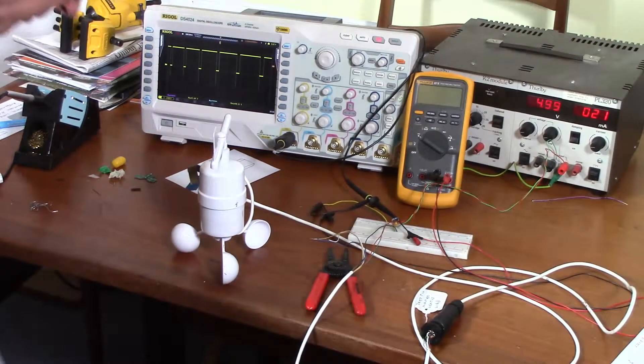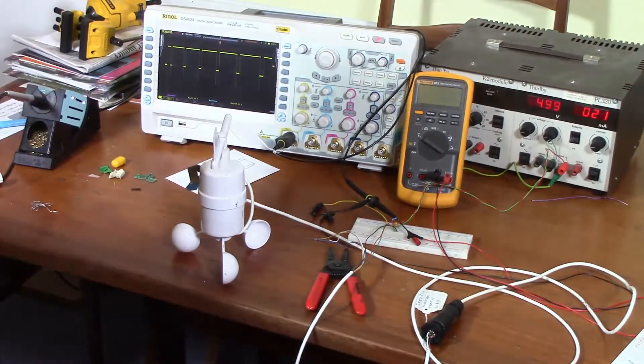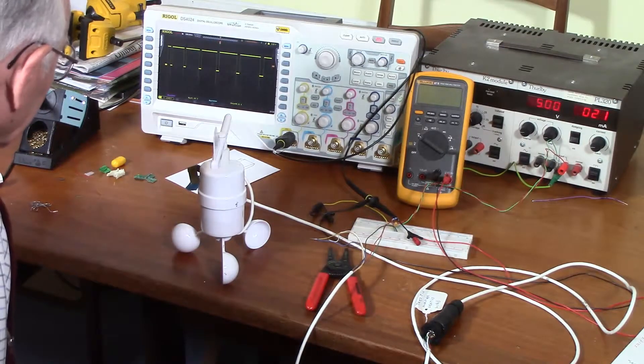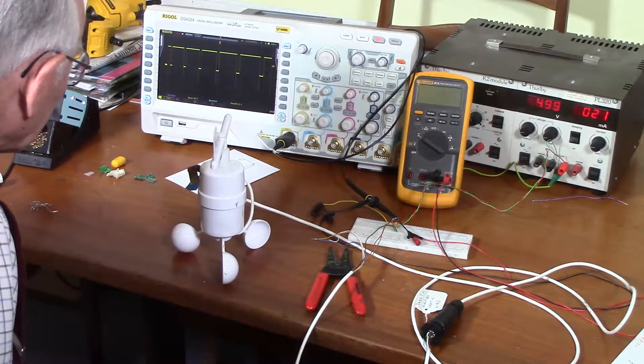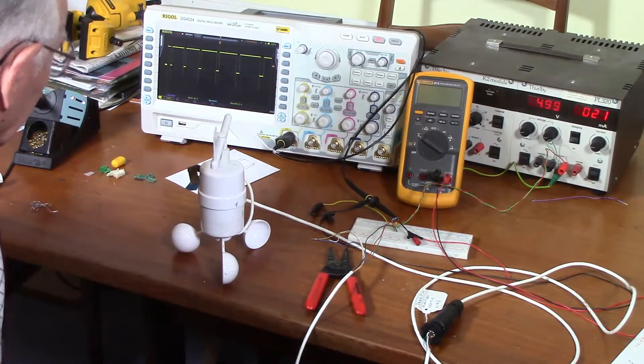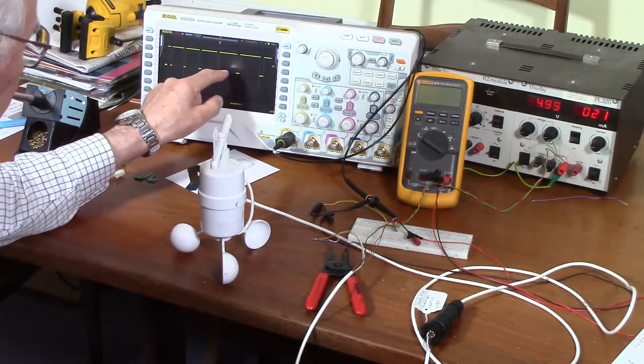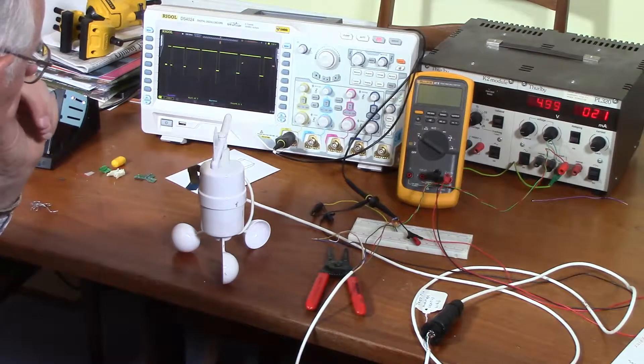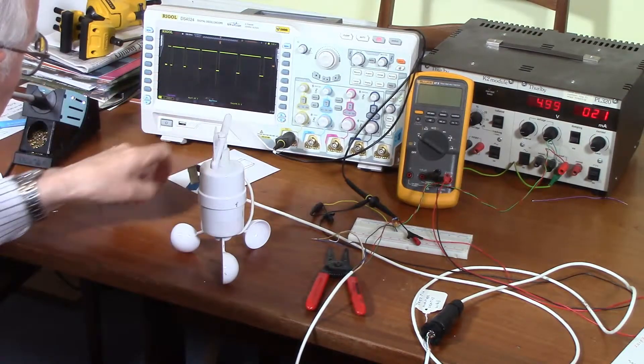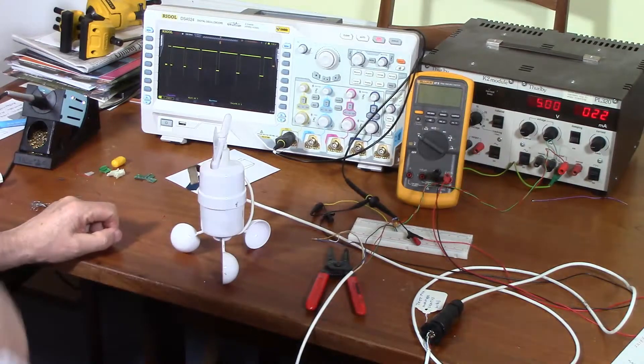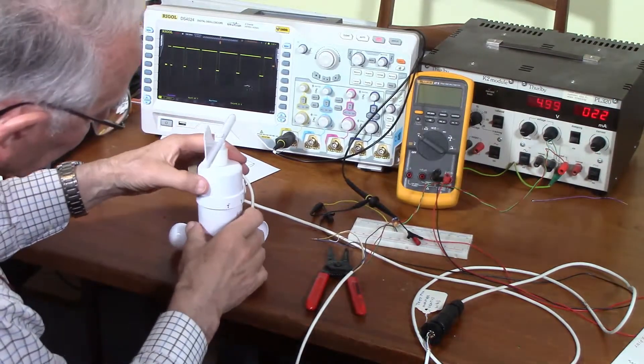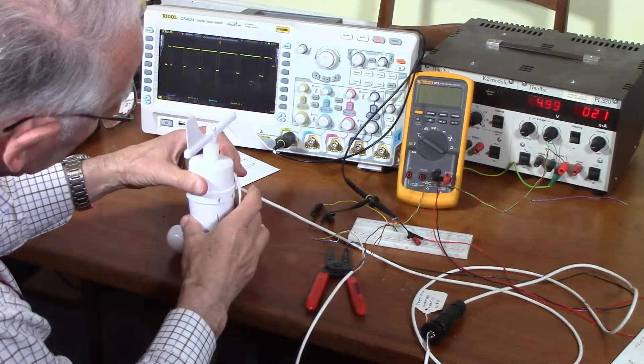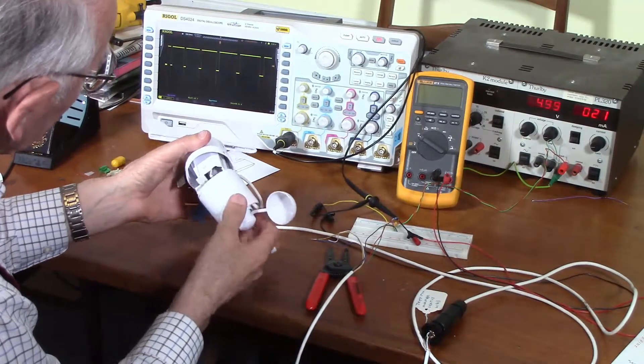Now the problem with this, apart from that spike, is that the duty cycle is 87%. Which means that when it drops down to zero, it only does so for 13% of the time. I'd rather it was a bit longer than that. And I'm just wondering if I were to move the sensor yet again, whether the duty cycle will change.